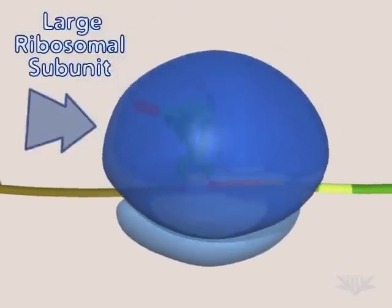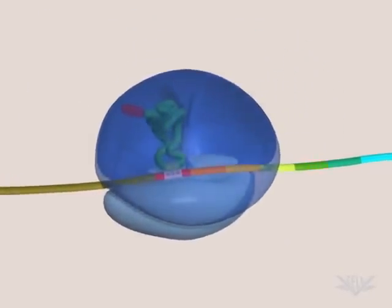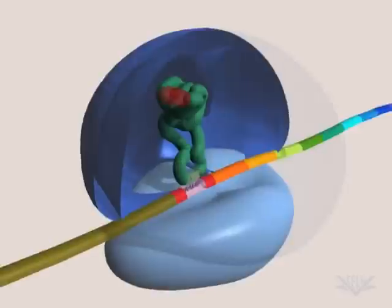The large subunit of the ribosome now binds to create the peptidyl, or P-site, and the aminoacyl, or A-site.